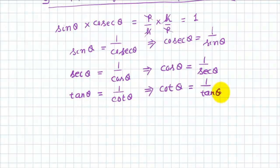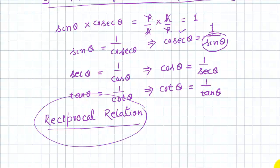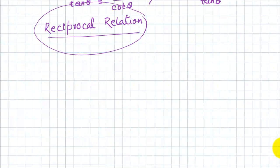This beautiful relationship is called the reciprocal relationship. You know what reciprocal means. So for sine theta, its reciprocal is 1 by sine theta, which we call cosec theta. This is the reciprocal relationship. This relationship we call the reciprocal relationship.